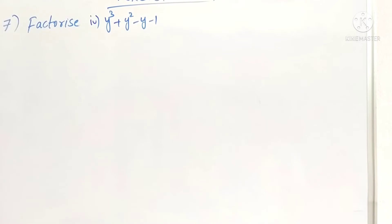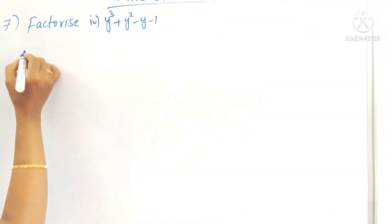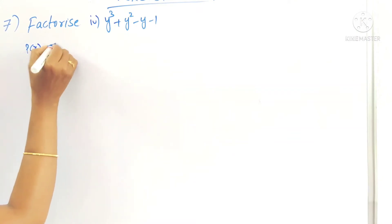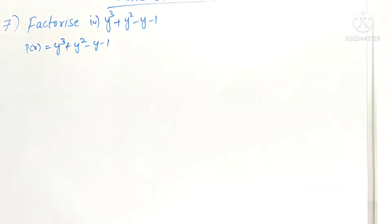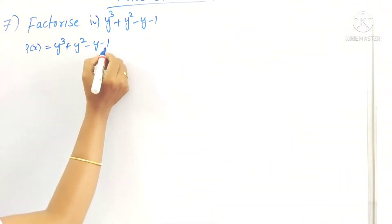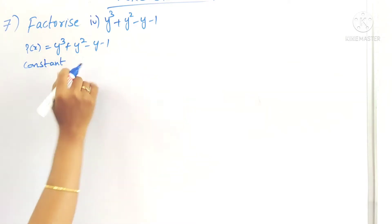Hello students, welcome to my channel. Today in this video we are going to see the factorization of y³ + y² - y - 1. This is the seventh problem in Exercise 2.4. First, write p(y) and next take the constant term.